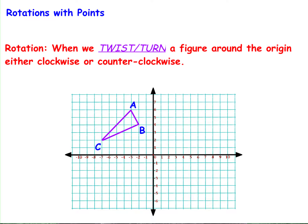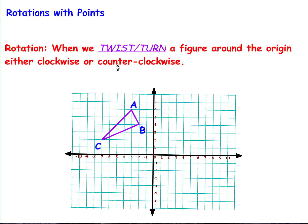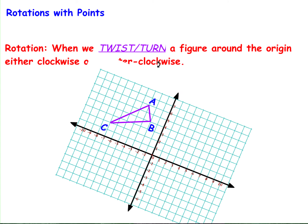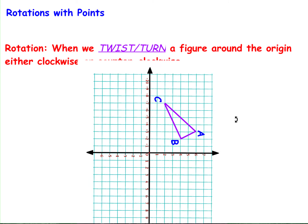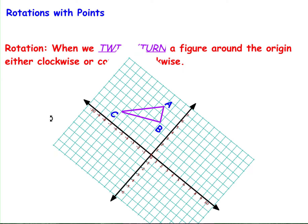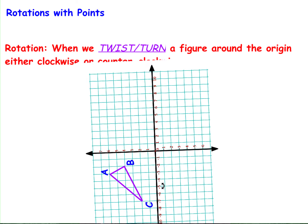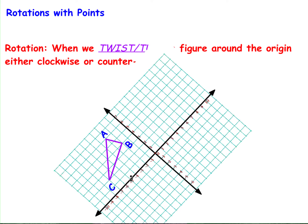So with rotations, real quick recap. A rotation is when we twist or turn a figure around the origin, either clockwise or counterclockwise. So if I had a triangle ABC right here and I wanted to rotate it about the origin — if I wanted to go clockwise, I would go the same direction that a clock goes. So this would be 90 degrees clockwise, and this would be my resulting figure. If I wanted to go counterclockwise, I would go the opposite direction, and this would be 90 degrees counterclockwise.